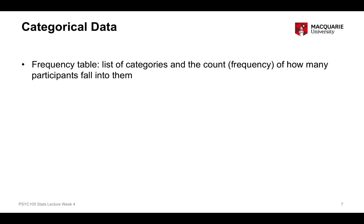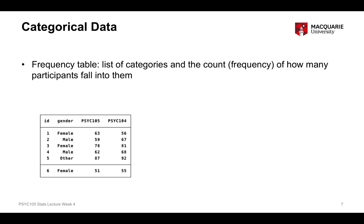The appropriate numeric summary statistic for categorical data is a frequency table. Rather than just listing all your data, a frequency table is a summary of all of the different kinds of categories and how many observations you have in each of those categories.